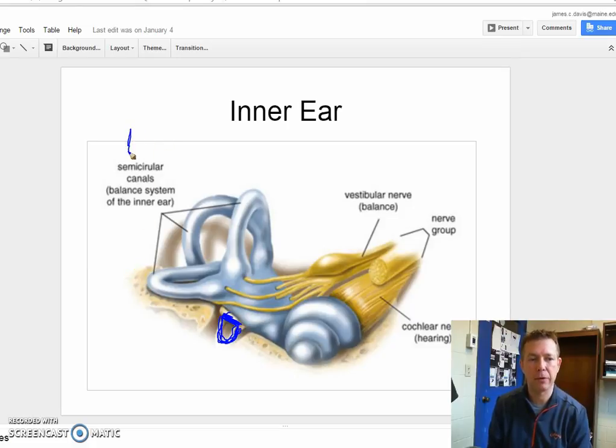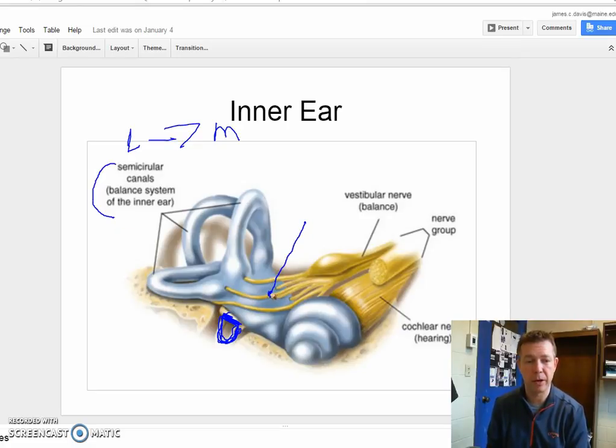Moving sort of lateral to medial, the three pieces that we find within our inner ear are these things called the semicircular canals, the vestibule, which is this area right here, and then the third one is the cochlea. So this piece here that looks kind of like a snail shell.